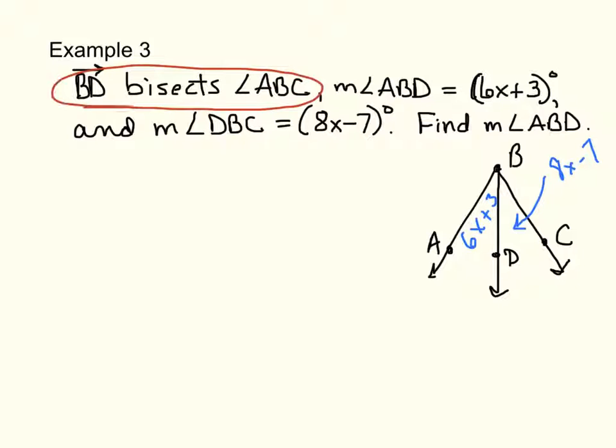This piece of information tells us what to do. We know that Ray BD bisects it. If we have an angle bisector, what does that do to each of these pieces? It cuts them in half. So, it cuts the big angle in half. Therefore, each of these pieces are what? They're congruent. So we know that those two angles are equal. So 6X plus 3 equals 8X minus 7. I want you to solve that yourself. Pause the video and solve it.